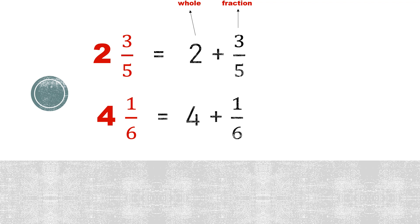Another example is 4 and 1 over 6. It is equal to 4 plus 1 over 6, where 4 is the whole number and 1 over 6 is the fraction.